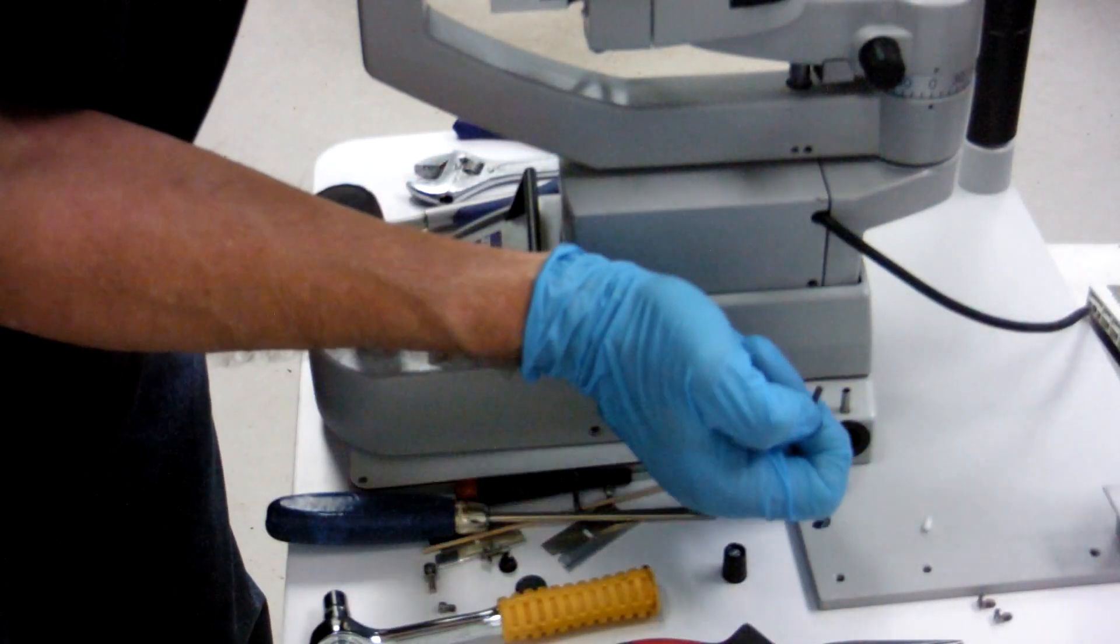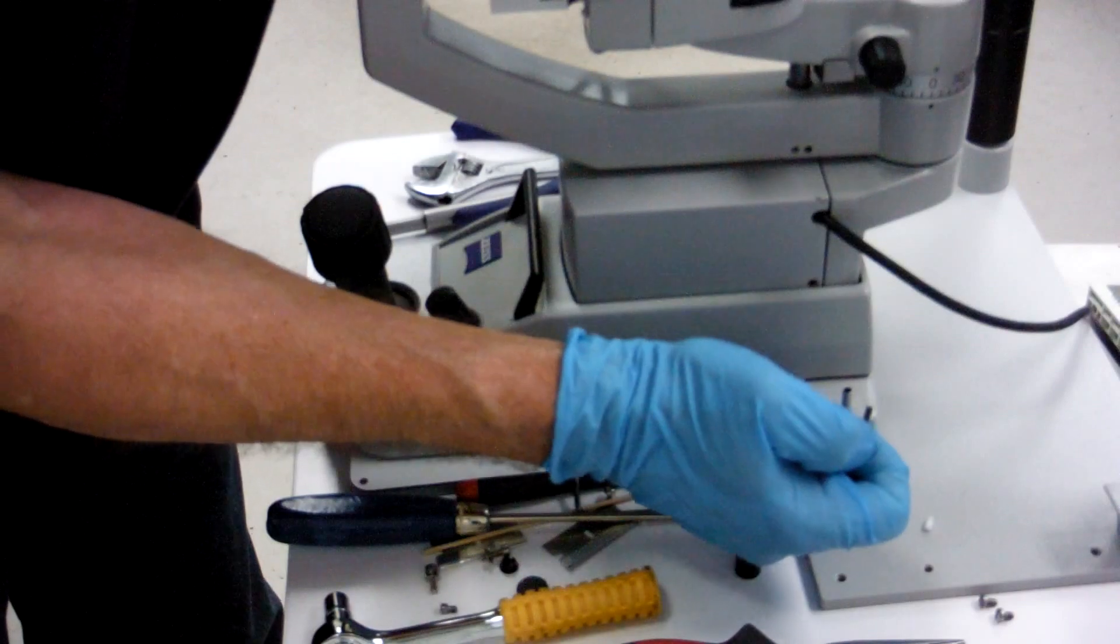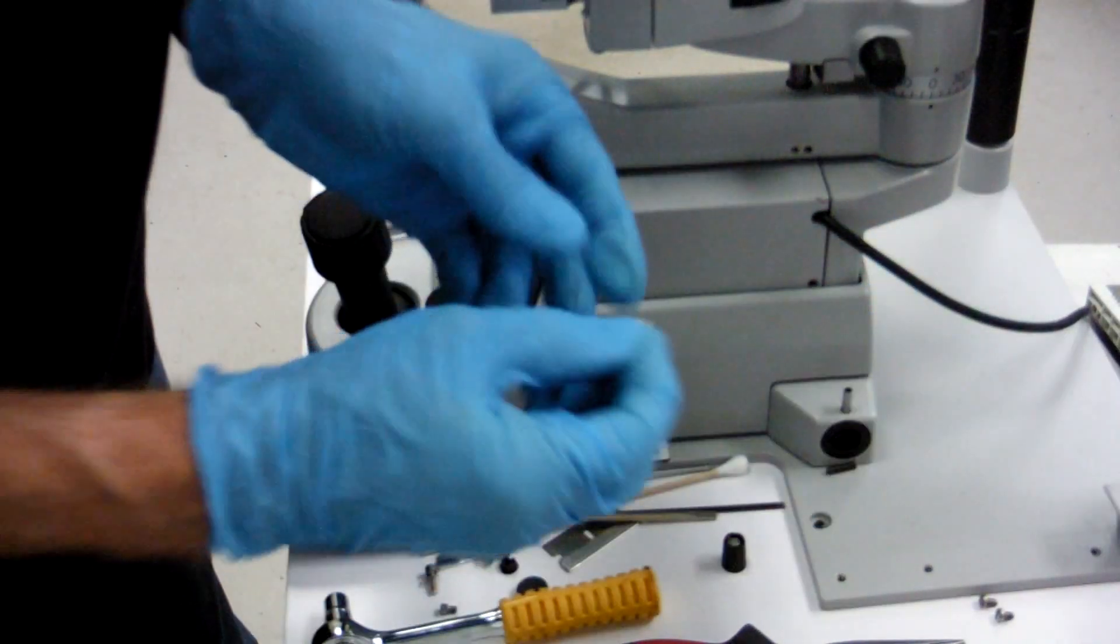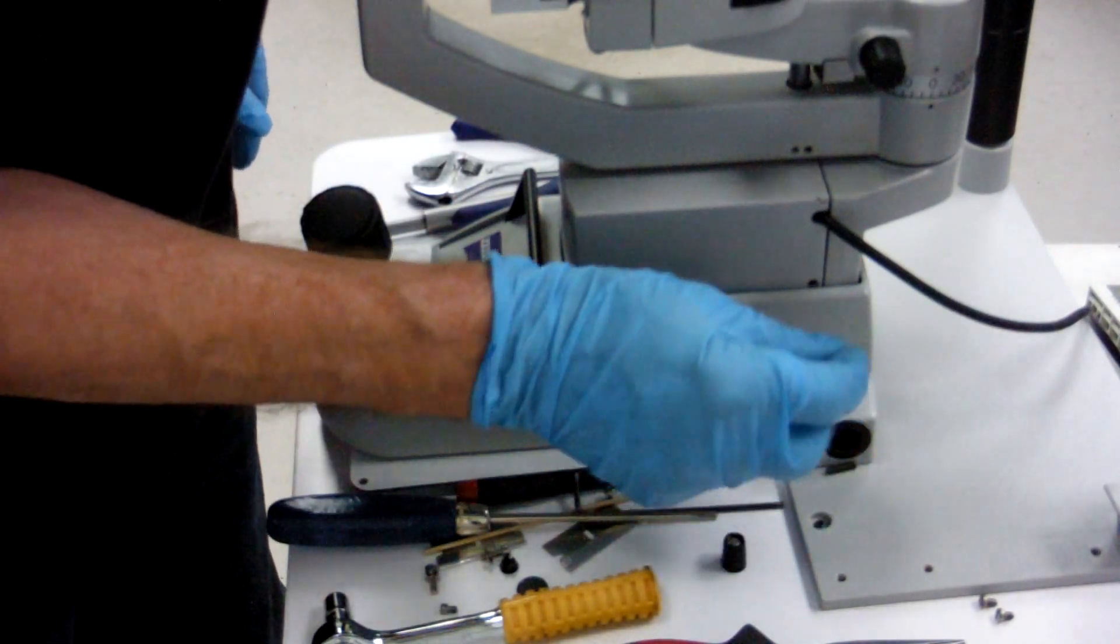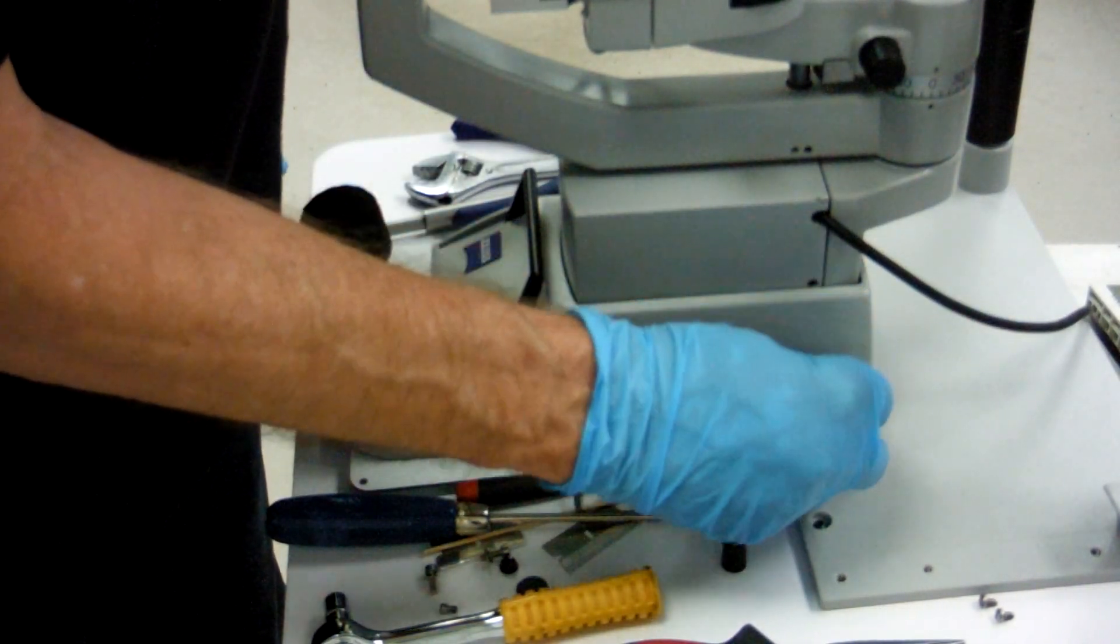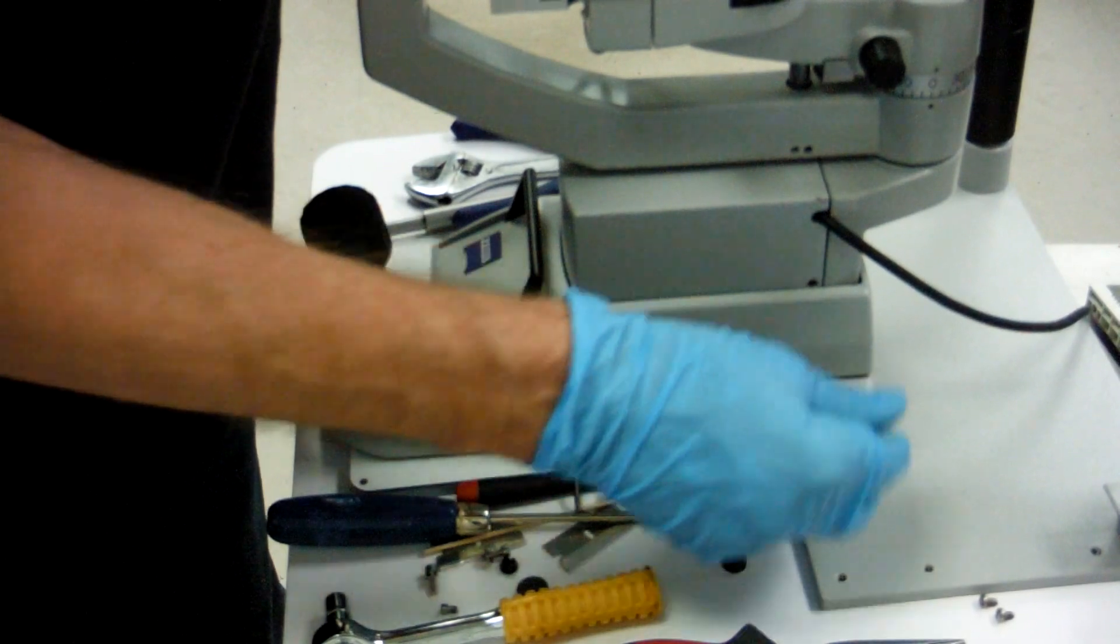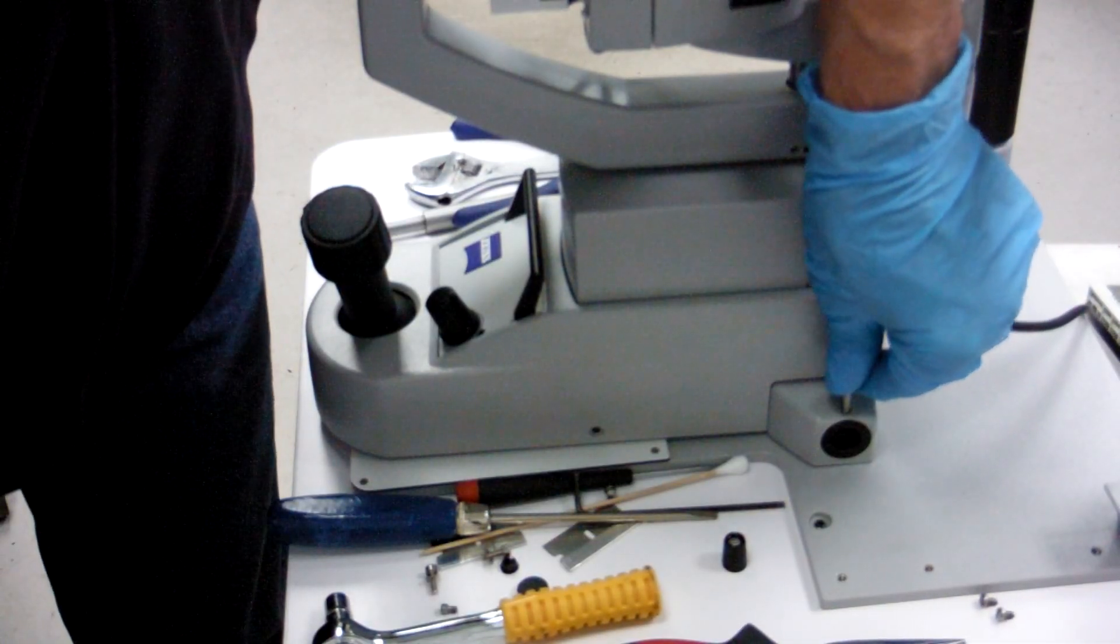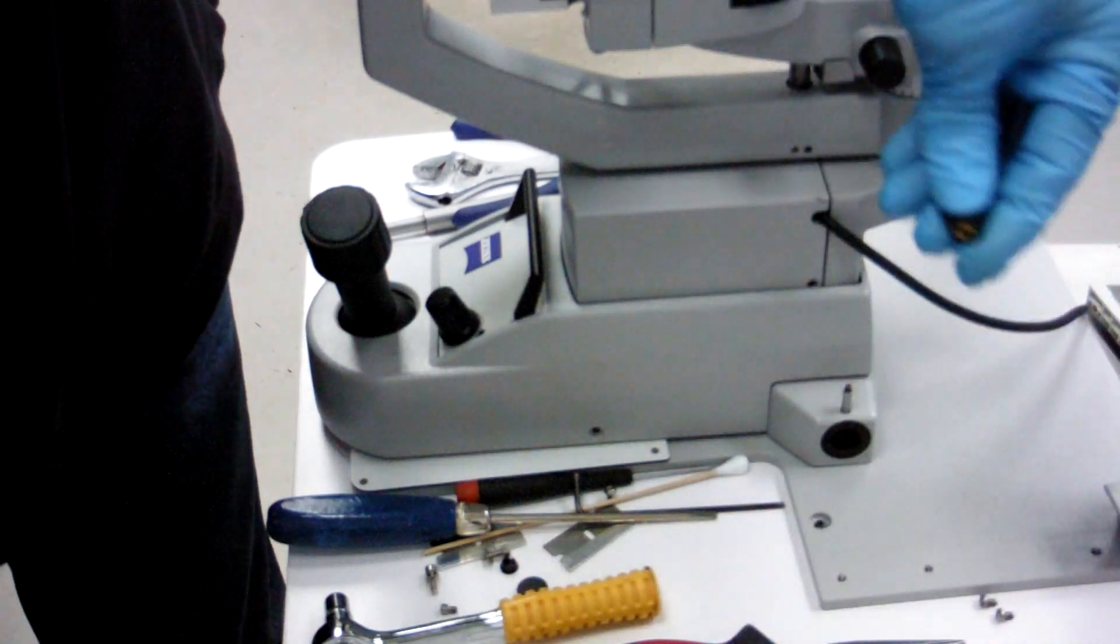You could put your screw on the bottom of it first to hold it in place. Put your plunger, the little end in first. Spring. And then your knob.